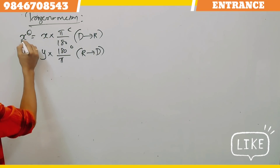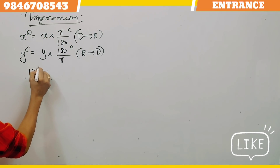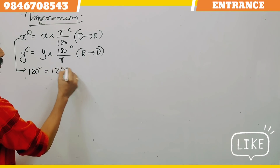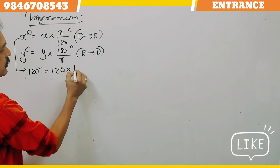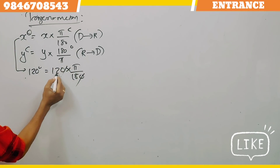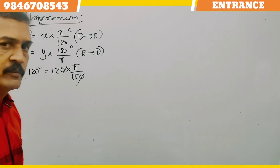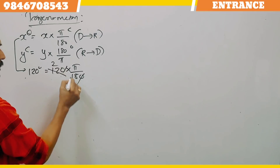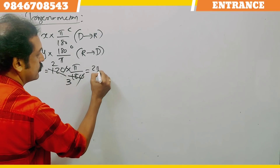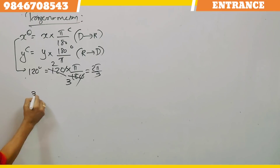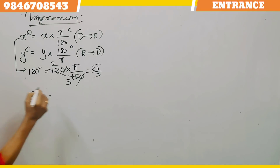Let's try an exam. We have 120 degrees. Converting: 120 × π/180. Simplify 120/180 to get 2/3, so the answer is 2π/3 radians — that is π/3. Next, we have 3π/5 radians. This is a radian to degree conversion: 3π/5 × 180/π. Pi cancels, giving 3 × 36 = 108 degrees.